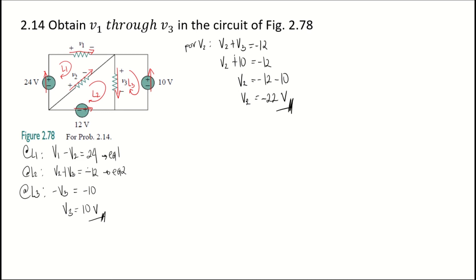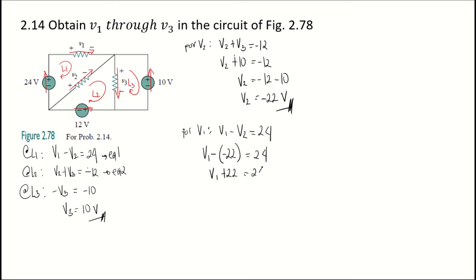Now that we have V2, we can solve for V1. Using Equation 1: V1 minus V2 equals 24 volts. Substituting V2 equals negative 22: V1 minus negative 22 equals 24, or V1 plus 22 equals 24. Transposing 22 to the right-hand side: V1 equals 24 minus 22, so V1 equals 2 volts.